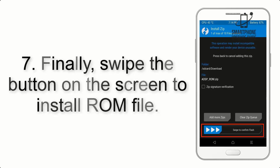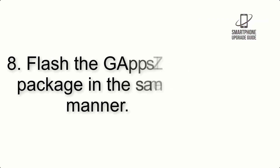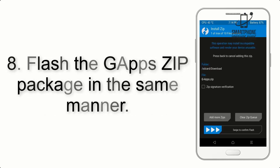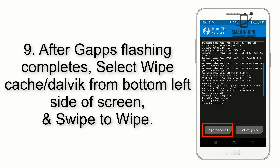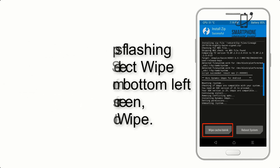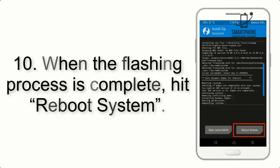Step 7: swipe the button on the screen to install the ROM file. Step 8: flash the GApps zip package in the same manner. Step 9: after GApps flashing completes, select Wipe Cache and Dalvik from the bottom left side of the screen and swipe to wipe.